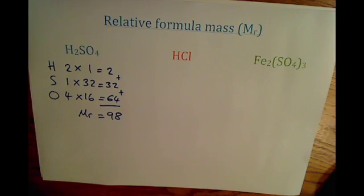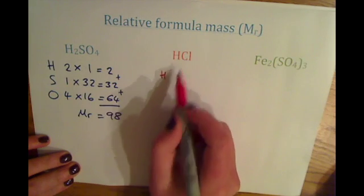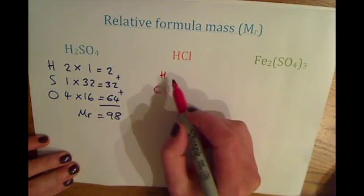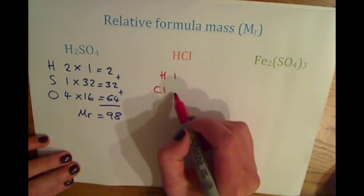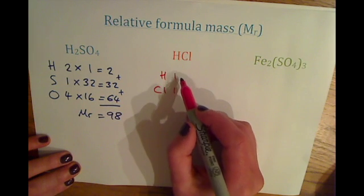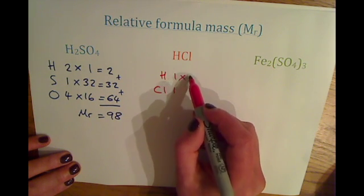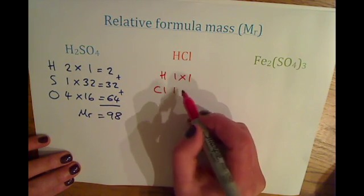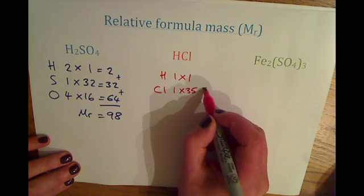For HCl, you have HCl, one of each atom. The relative atomic mass of hydrogen is one, and the relative atomic mass of chlorine is 35.5.